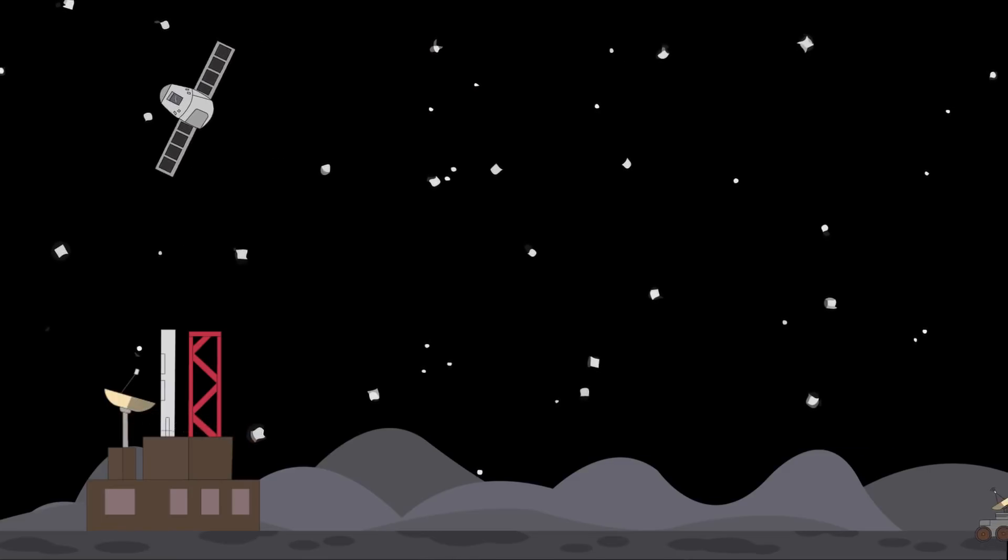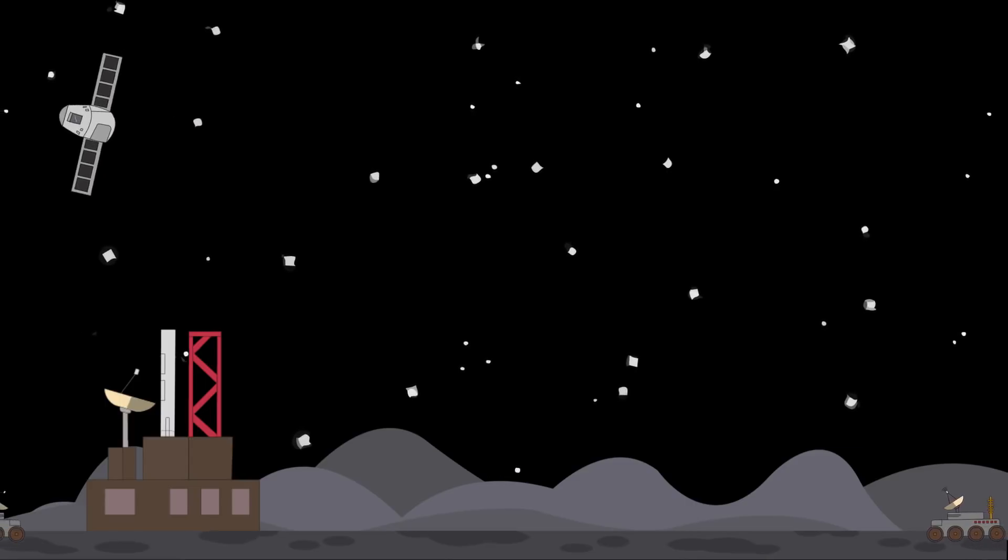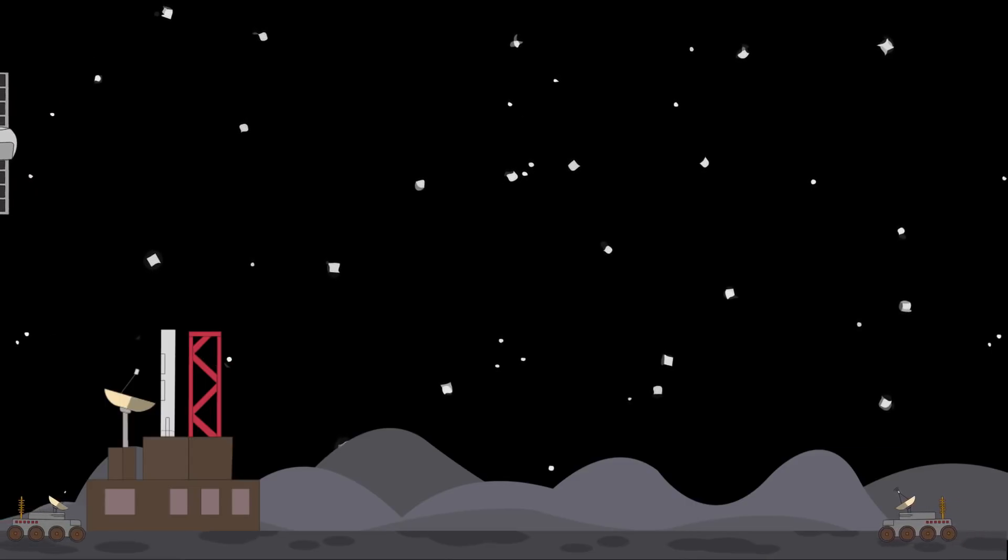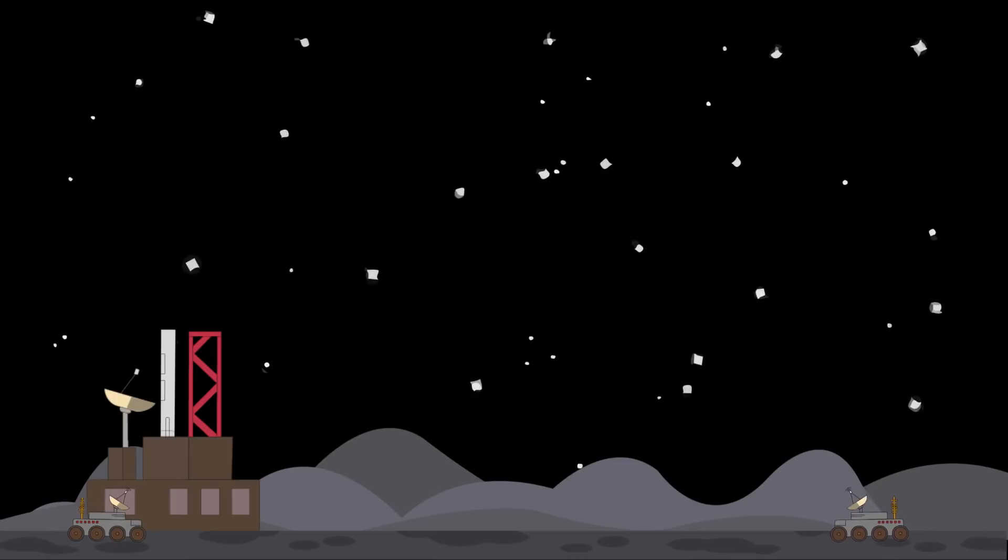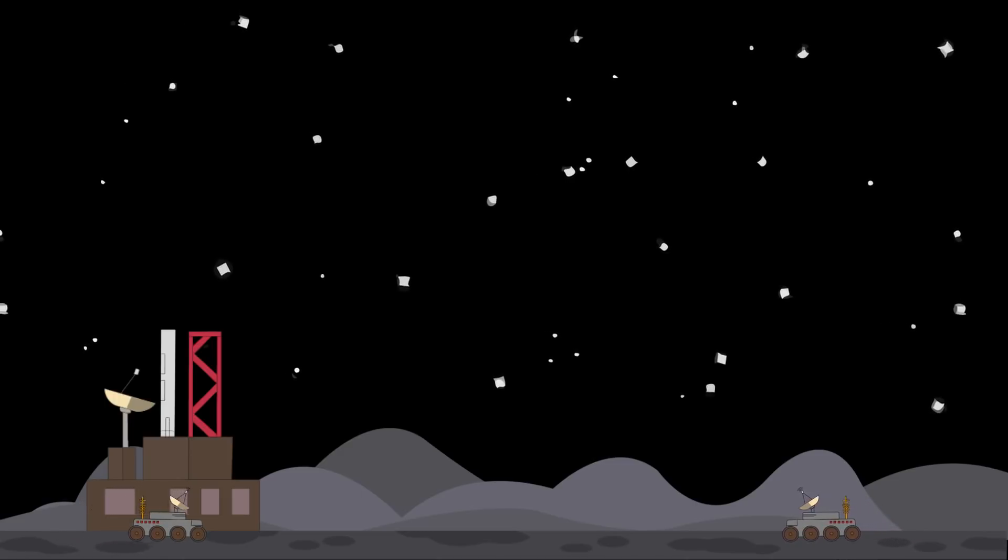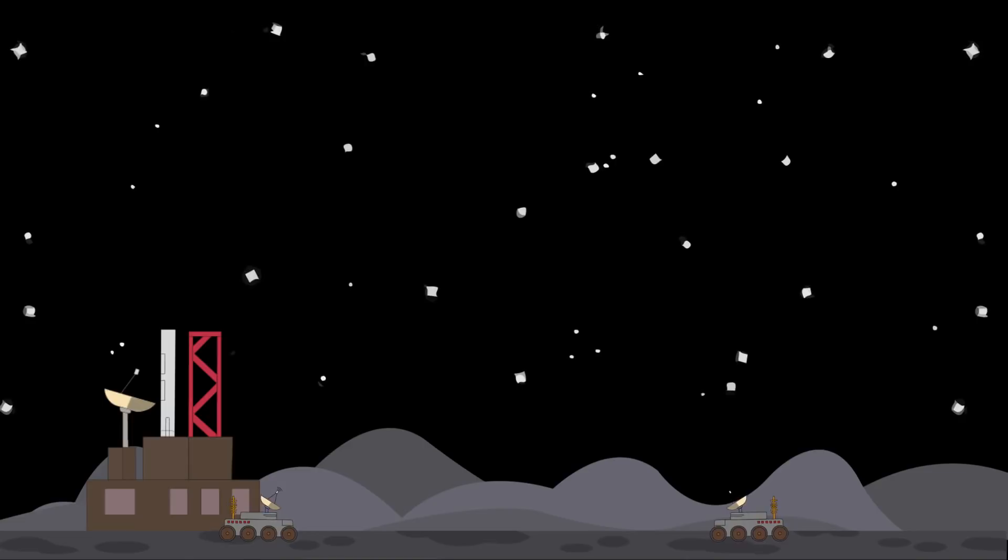Rovers could be used to find a suitable location to set up such a base. They could also explore nearby resources, making it far safer and cheaper than humans. Although it is said what a rover can do in ten years, an astronaut can do in a couple of hours.